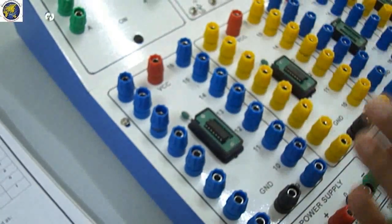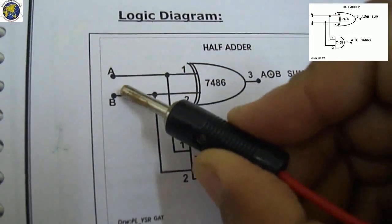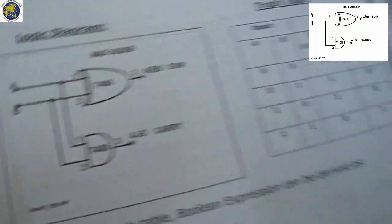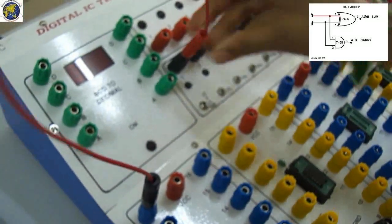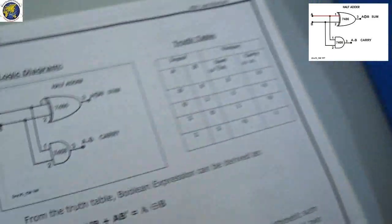Now pin number 1 of the 7486 is connected to A, first input A. Next, the same pin number 1 of 7486 is connected to AND gate pin number 1.